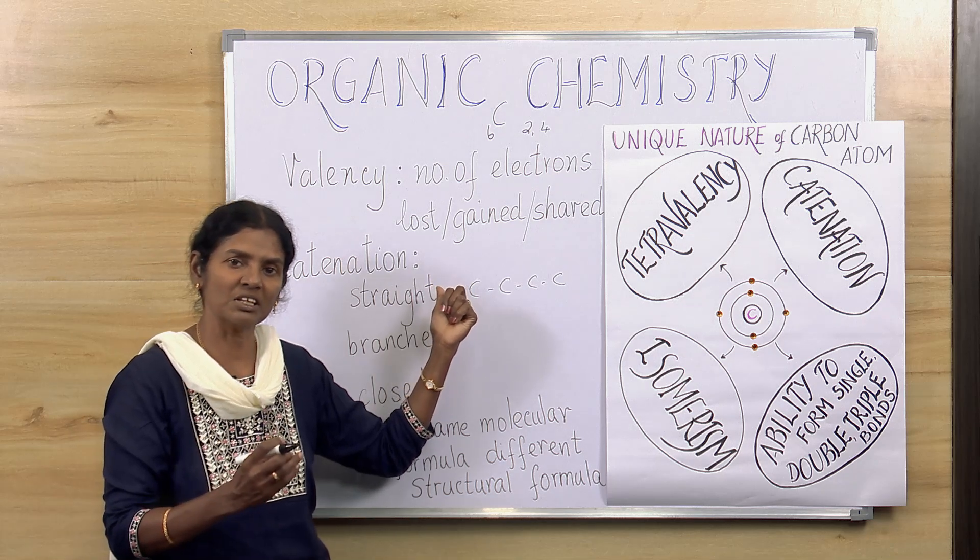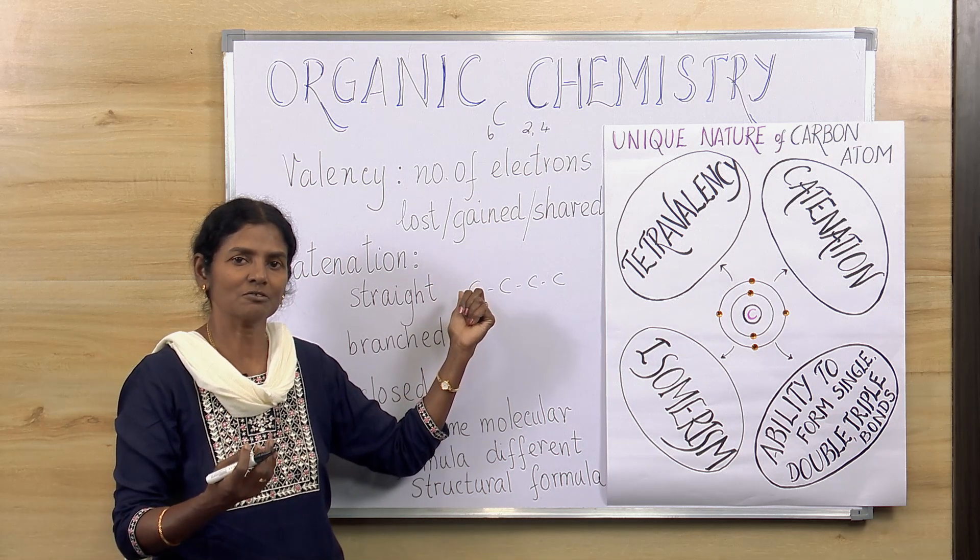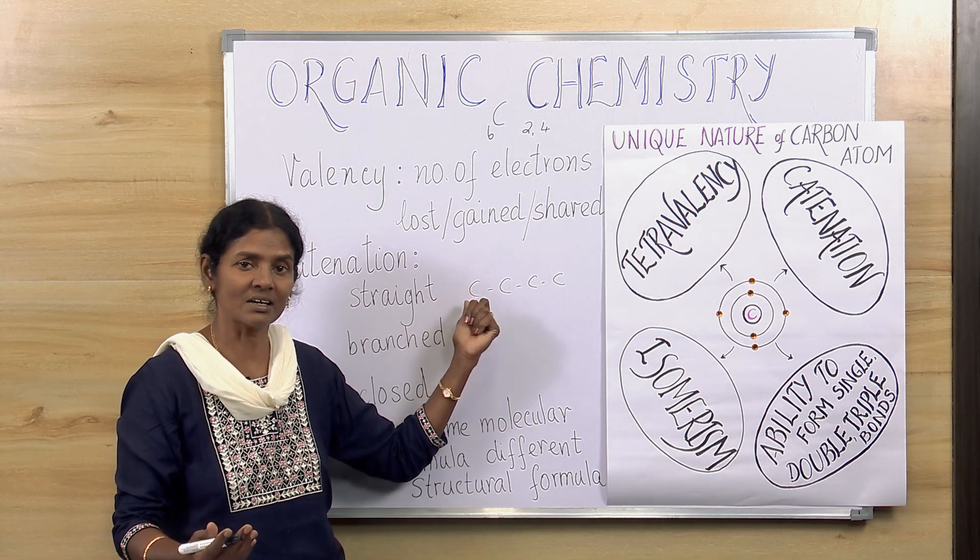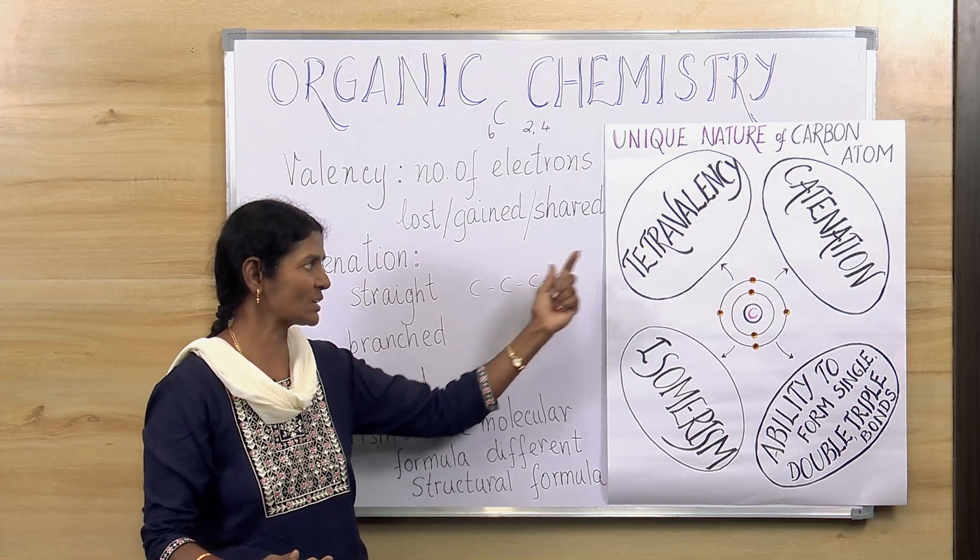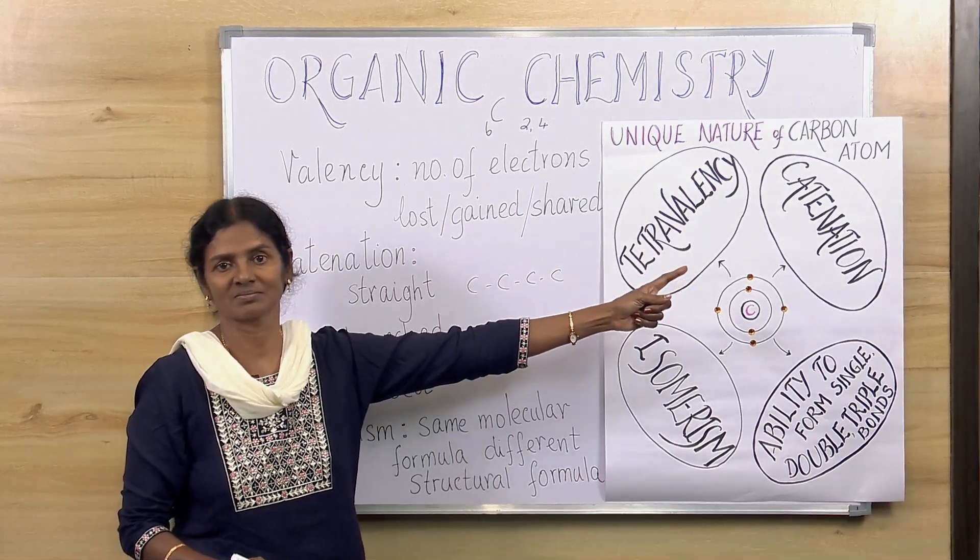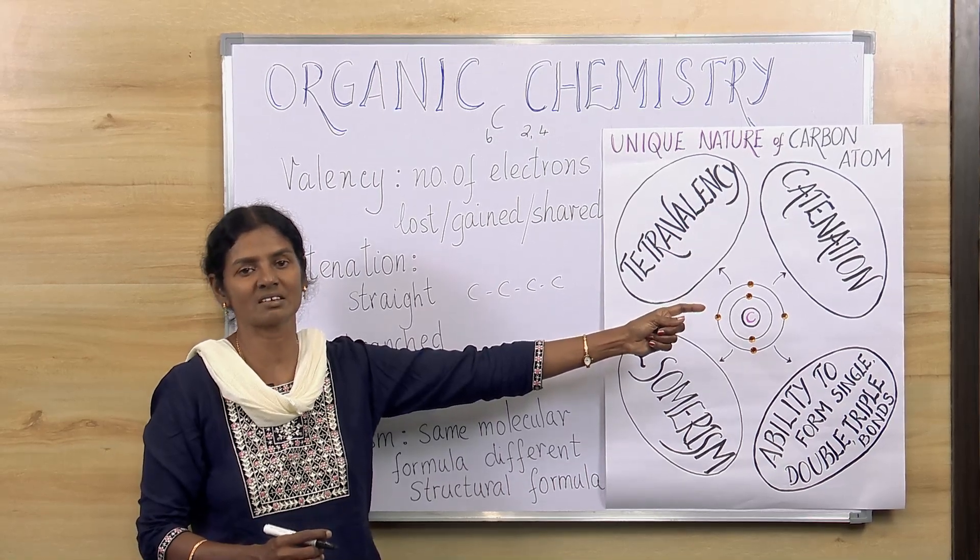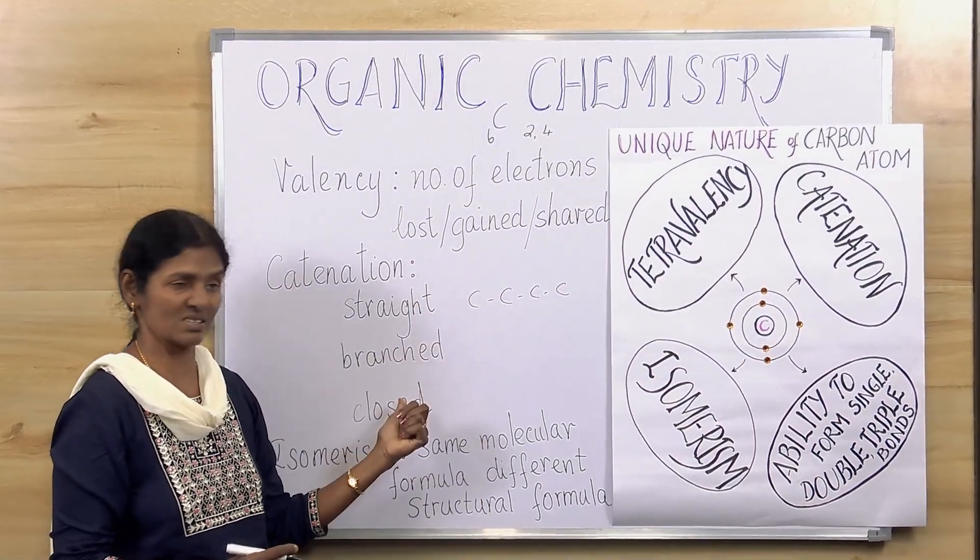The ability of carbon atom to have carbon to carbon linkage that results in giant molecules. That's what is called as catenation. Giant molecules, and only carbon to carbon linkages. This can happen in three ways.